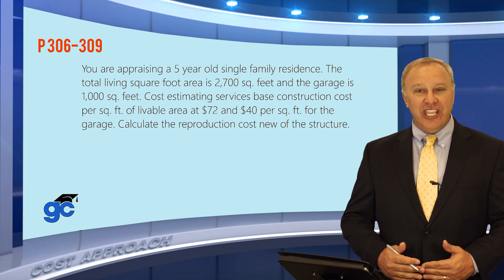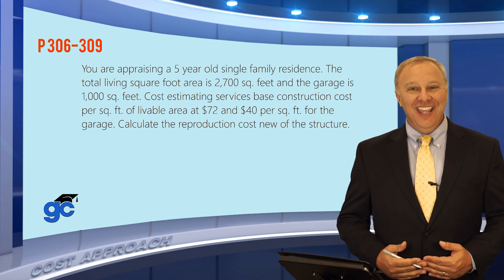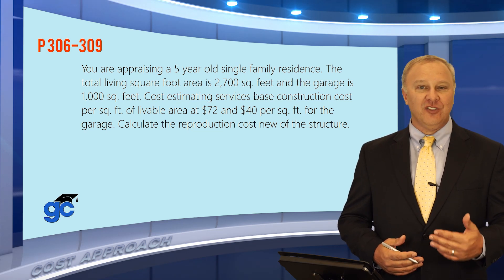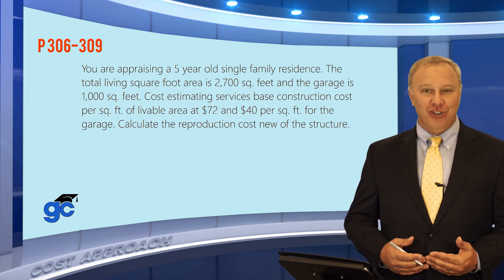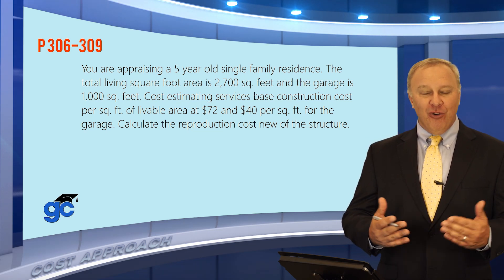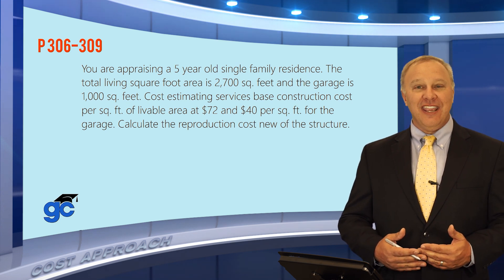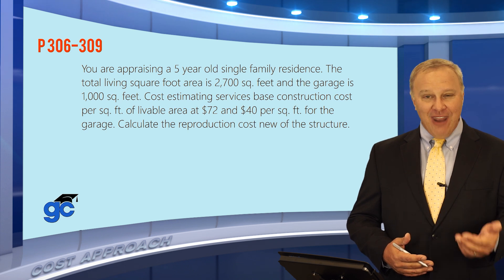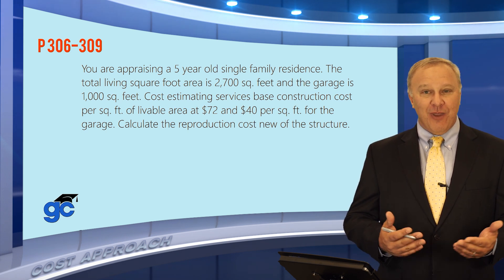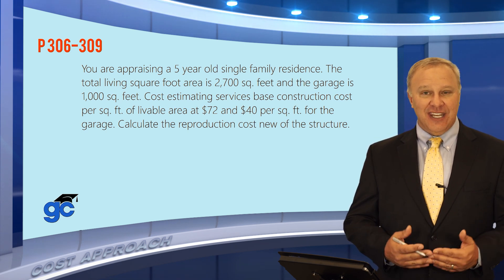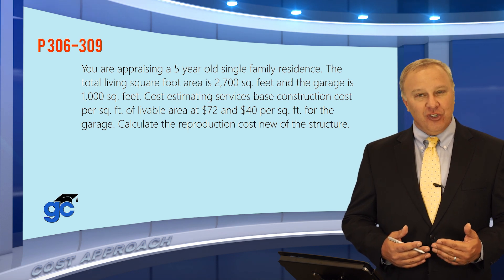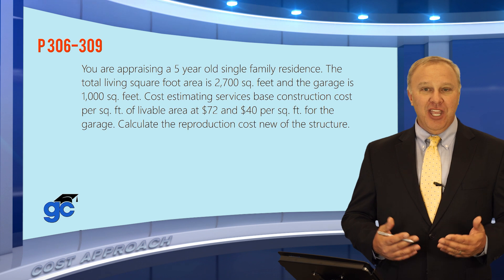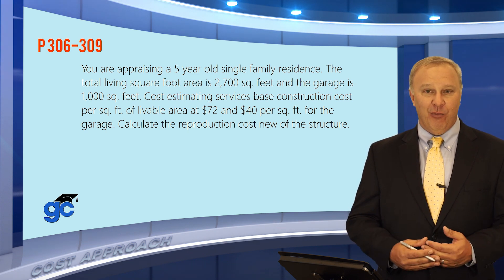In this video we're going to talk about the cost approach to appraising. Sometimes you may see this written as the cost depreciation approach or cost minus depreciation approach — it's all the same thing. To calculate this, we take the reproduction cost of the building, subtract out any depreciation, and add back in the land value to estimate what the value of that property is today. This is typically used on special-purpose properties where comps are not available and where there's no income available to appraise using the income approach.